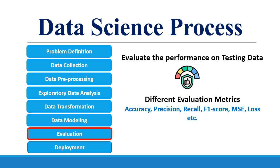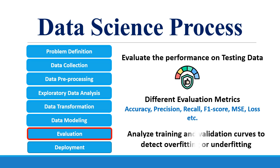Evaluation metrics may include accuracy, precision, recall, F1 score, mean squared error, loss function, etc. These evaluation metrics depend upon the machine learning algorithm chosen for the training process. During the evaluation process, the training and validation curves are also analyzed to detect errors like overfitting or underfitting.